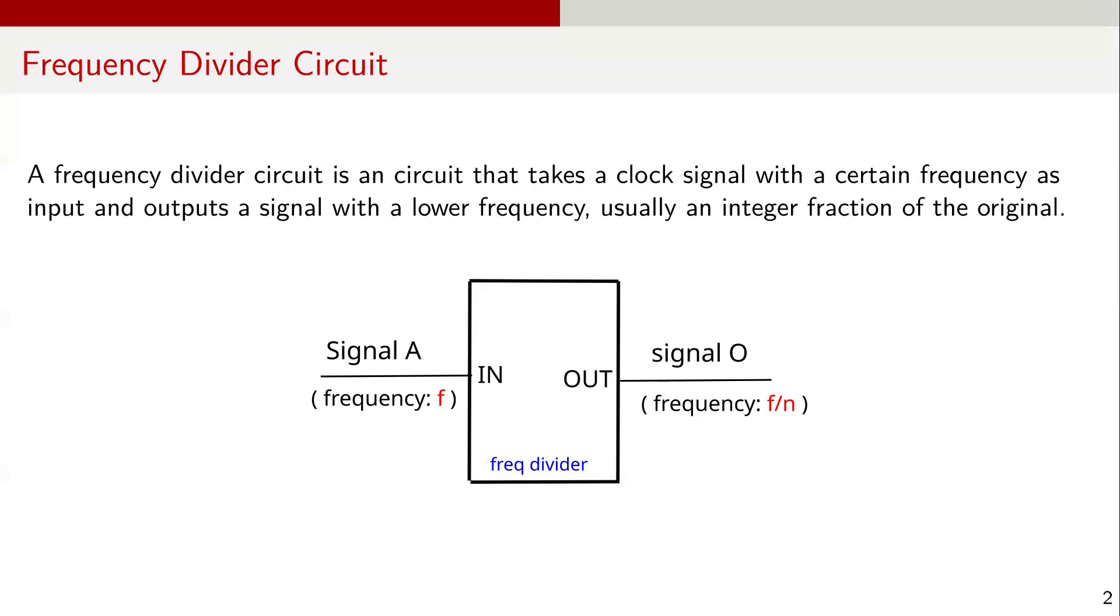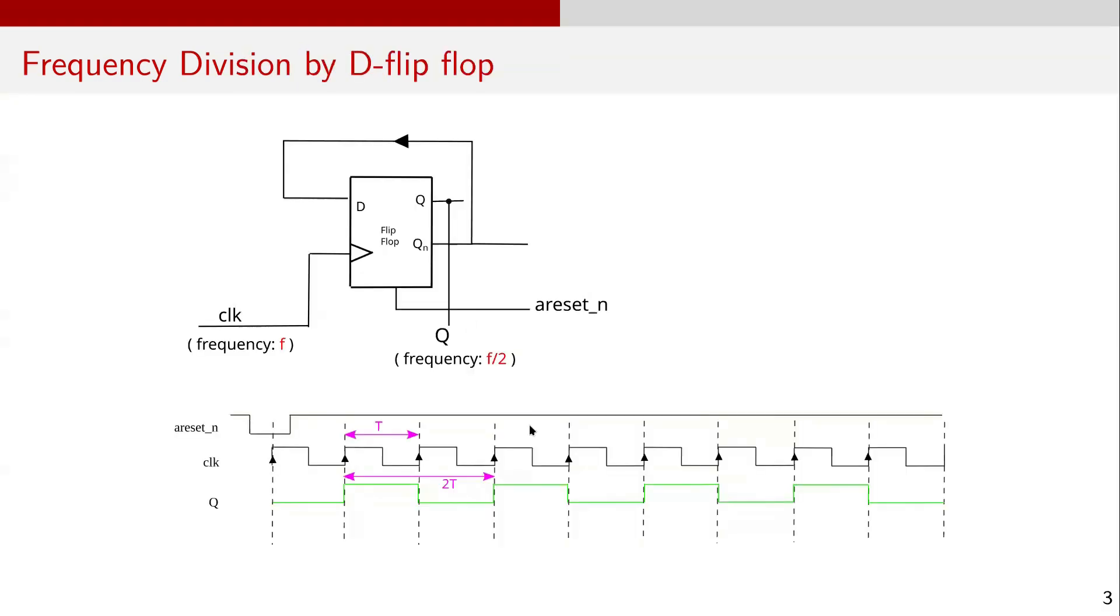In these circuits, starting with one clock source, we can create slower clocks at precise ratios which are very useful in many digital systems. Before we dive into the details, let's review two important concepts.